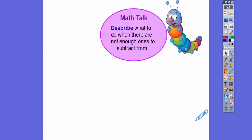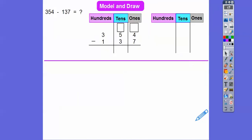So describe what to do when there weren't enough ones to subtract from. Well, we borrow from one of the tens. Remember, one ten equals ten ones — that's how we do it. When we're subtracting, if we don't have enough, we borrow from the tens column. So let's do that here: 354 minus 137.